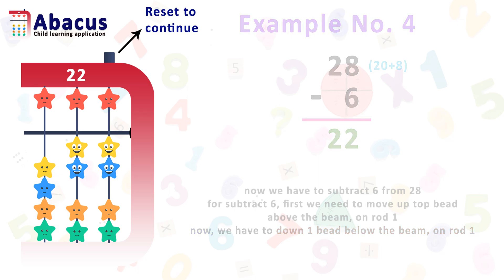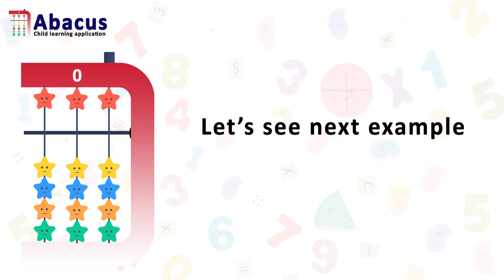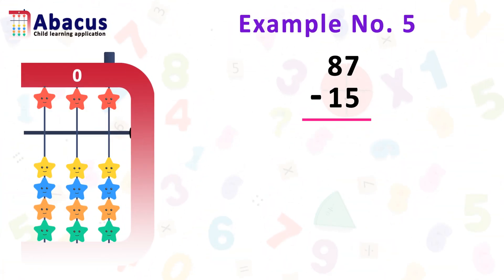To go to the next example, we have to reset the abacus. For reset, we press the top right button. Next example: here we have example number 5, which is 87 minus 15.